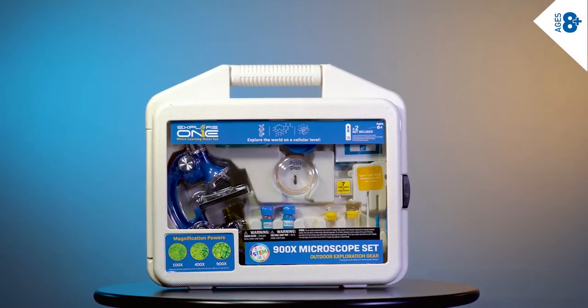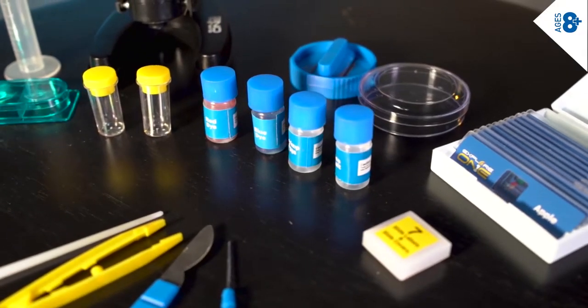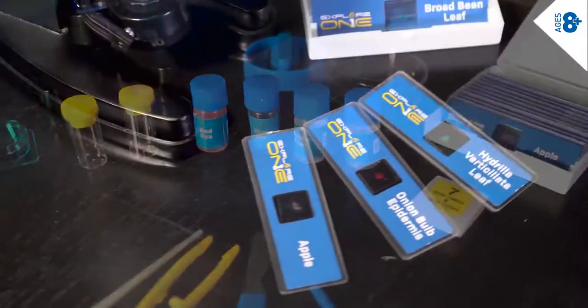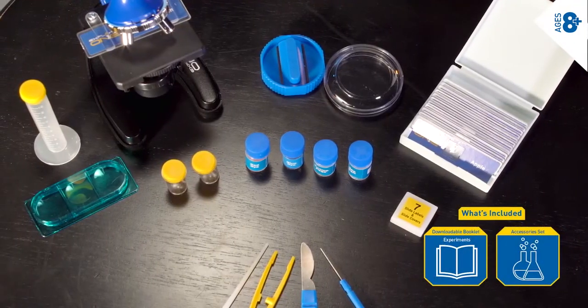The original classic 28-piece 900x microscope now gives you more than 45 pieces in the set. Included are all necessary tools for observing and preparing slides, hatching real brine shrimp, and gathering specimens collected in the field.